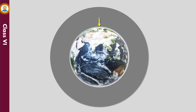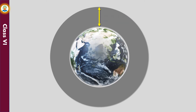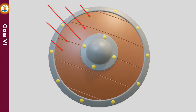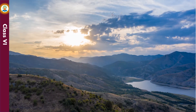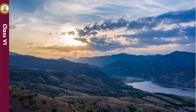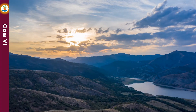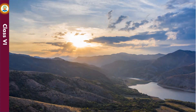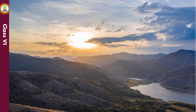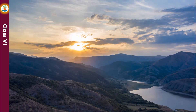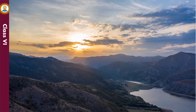The atmosphere extends to a height of about 500 km above the Earth's surface. It acts as a shield for the Earth and protects us from UV rays. Atmosphere is also responsible for maintaining the water cycle in nature. It maintains the temperature of Earth. Atmosphere is essential for life on Earth as it has oxygen gas required for breathing by all living organisms.